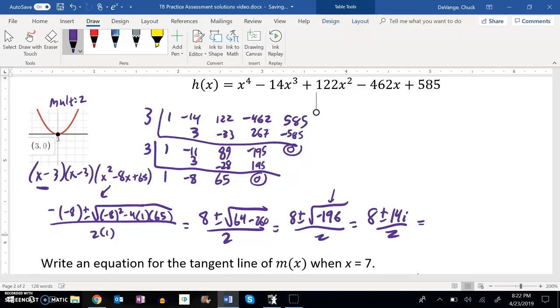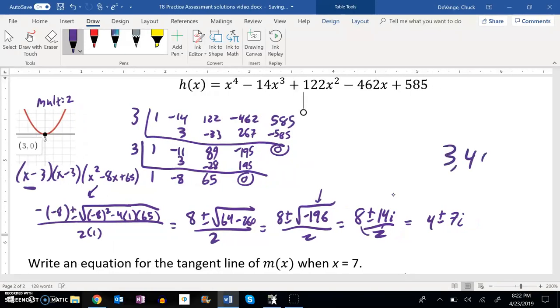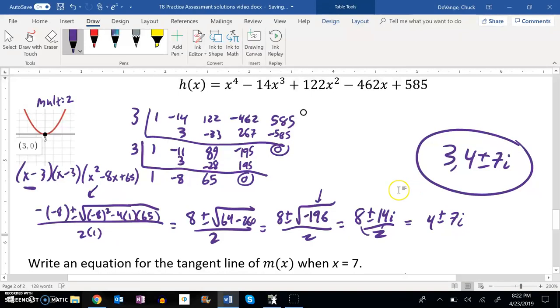These are both still divisible by 2, so that gives me a 4 and a 7. 4 plus or minus 7i. So my answers are 3 and 4 plus or minus 7i. I don't need to list the 3 twice. So there it is.